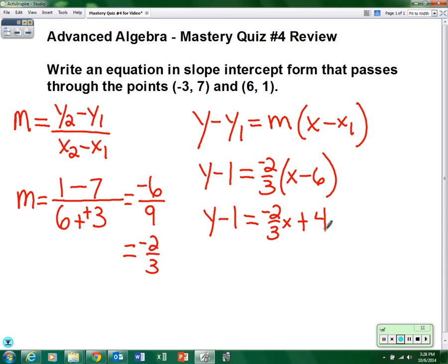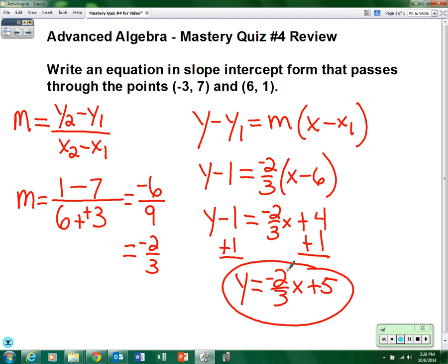Alright, one step left and we have accomplished our task. That would be to get rid of the minus 1. Add 1 to both sides. So y equals negative 2/3 x plus 5. We have now determined the slope-intercept form.